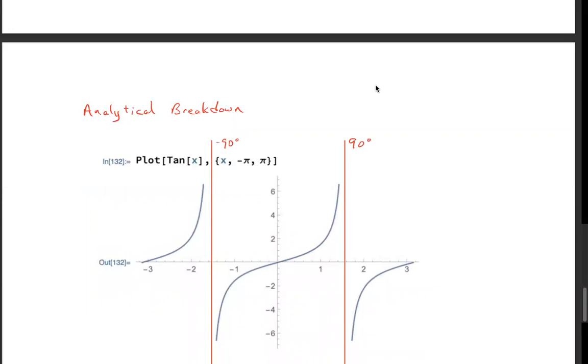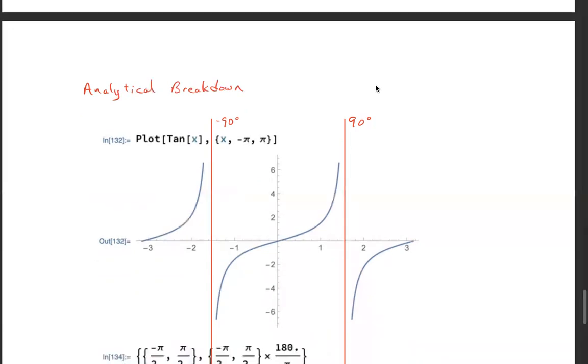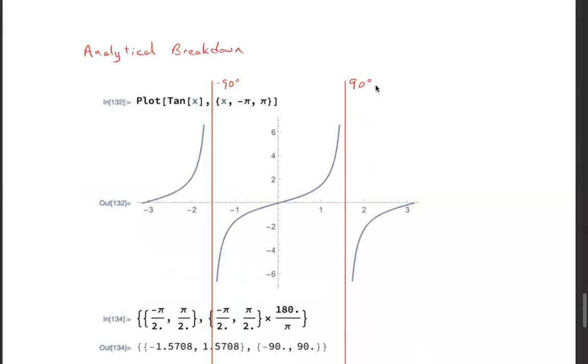There is a point where the analytical method breaks down, and that's where you have, let's say, 200 grams at 20 and 200 grams at minus 20. Well, if you look at the tangent, there's a point here right at minus 90 and right at 90 where it blows up. You can't, because basically you're dividing by zero.